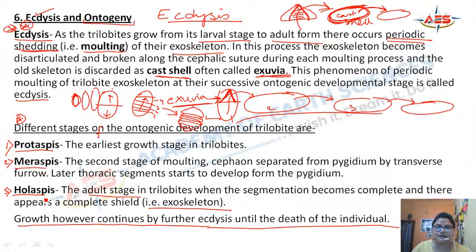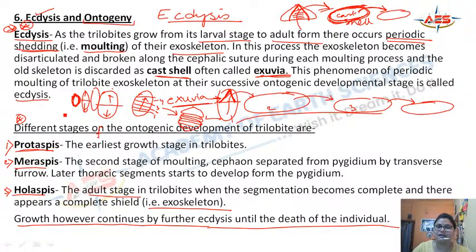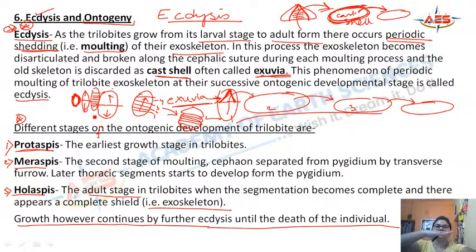The three ontogenic stages in detail: Protaspis — initial larval stage, small size, no transverse furrow, no segmentation. Meraspis — second stage, a transverse furrow develops separating Cephalon from Pygidium, thoracic segments are added from Pygidium towards Cephalon. Holaspis — fully grown adult trilobite with complete exoskeleton, Cephalon, thoracic segments, and Pygidium all present. However, growth continues even at the holaspis stage through further molting.